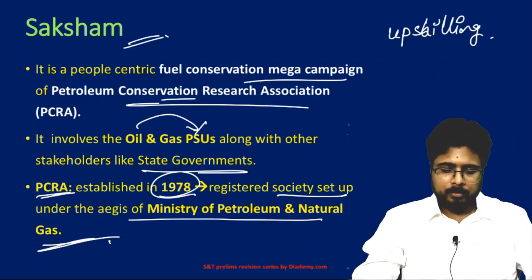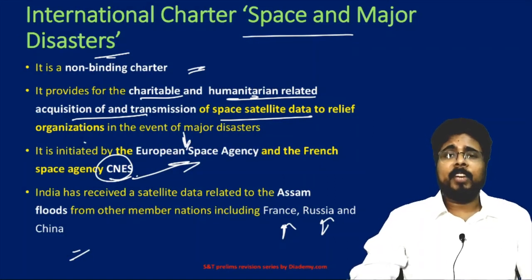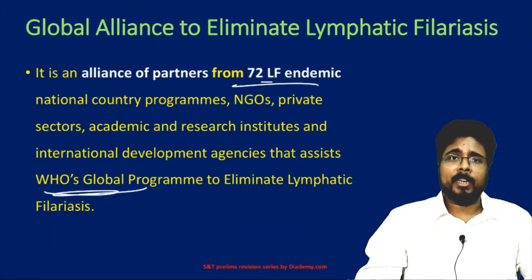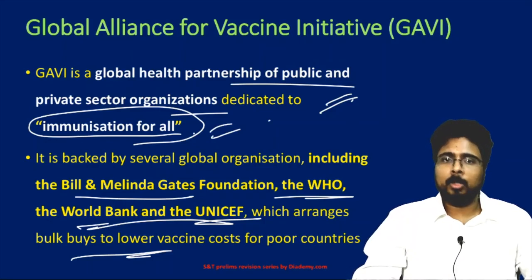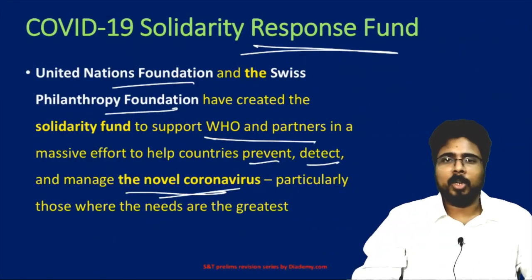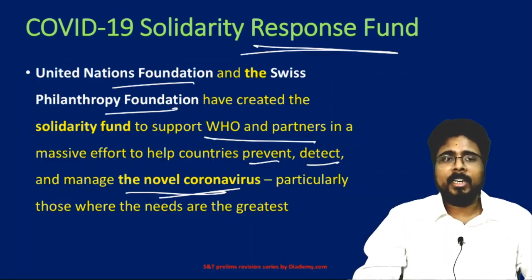Let us revise what we have studied. The International Charter for Space and Major Disasters: an affected member country gets satellite and other related information from various members. The Global Alliance to Eliminate Lymphatic Filariasis is under the WHO. The Global Alliance for Vaccine Initiative is the immunization-for-all initiative backed by the Bill and Melinda Gates Foundation, WHO, World Bank, and UNICEF — they buy bulk vaccines at low cost and distribute to poor countries. The COVID-19 Solidarity Response Fund is an initiative of the United Nations Foundation and Swiss Philanthropic Foundation to fund WHO and partners in preventing, detecting, and managing the novel coronavirus.